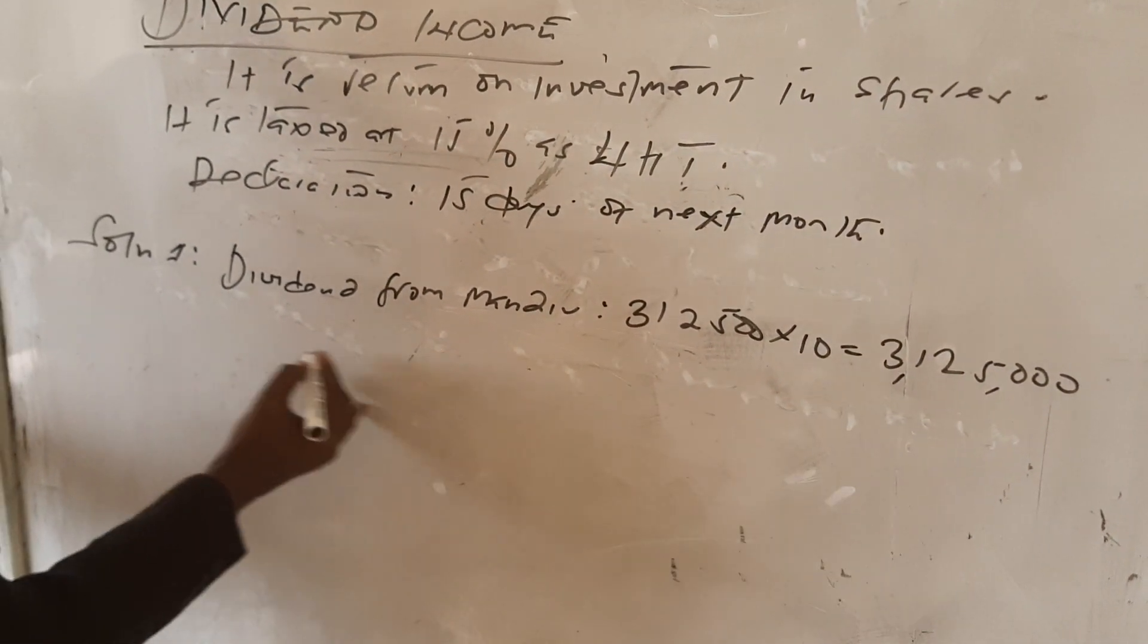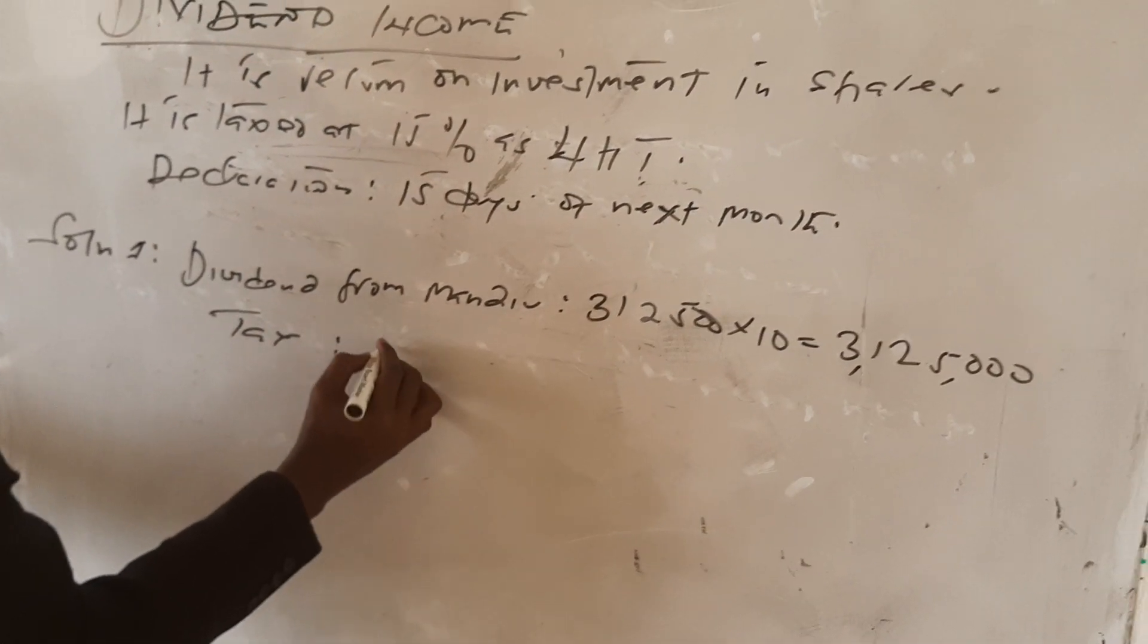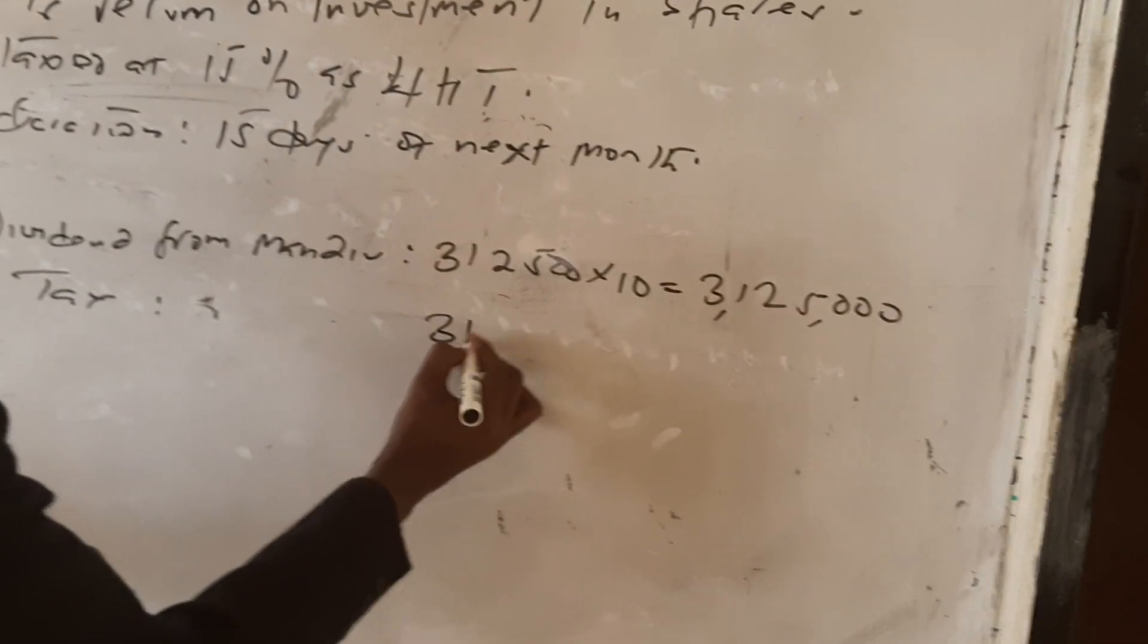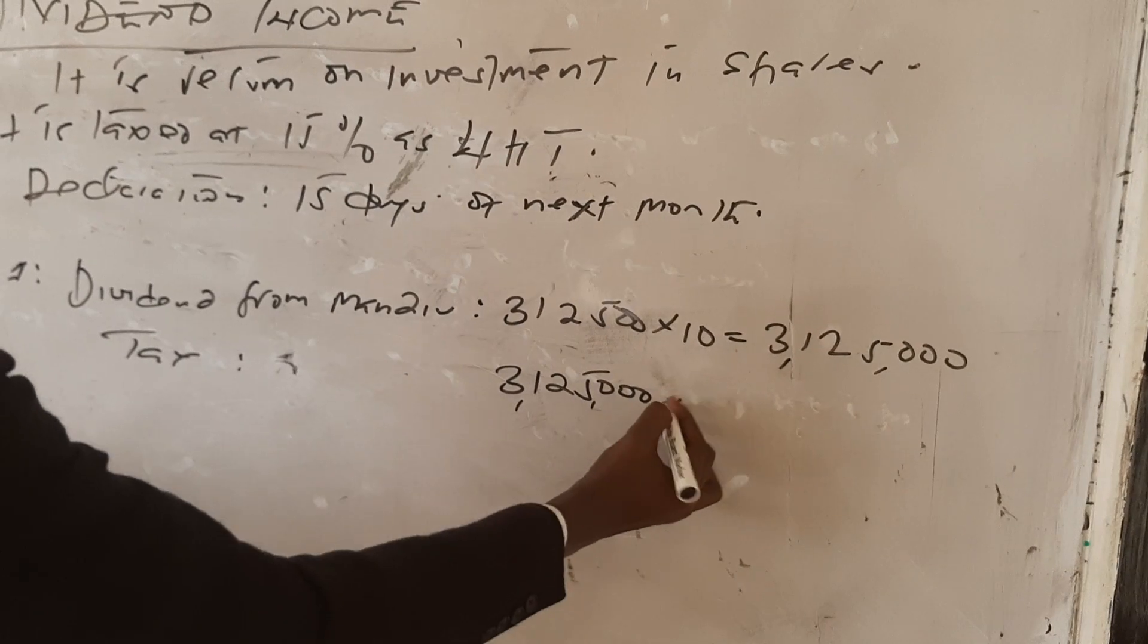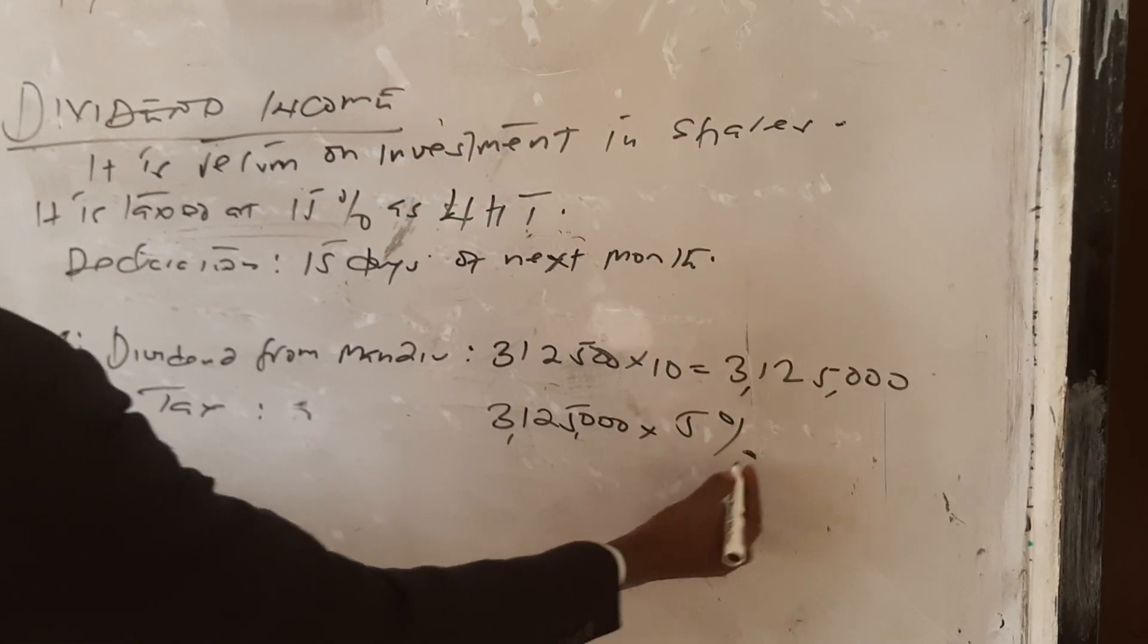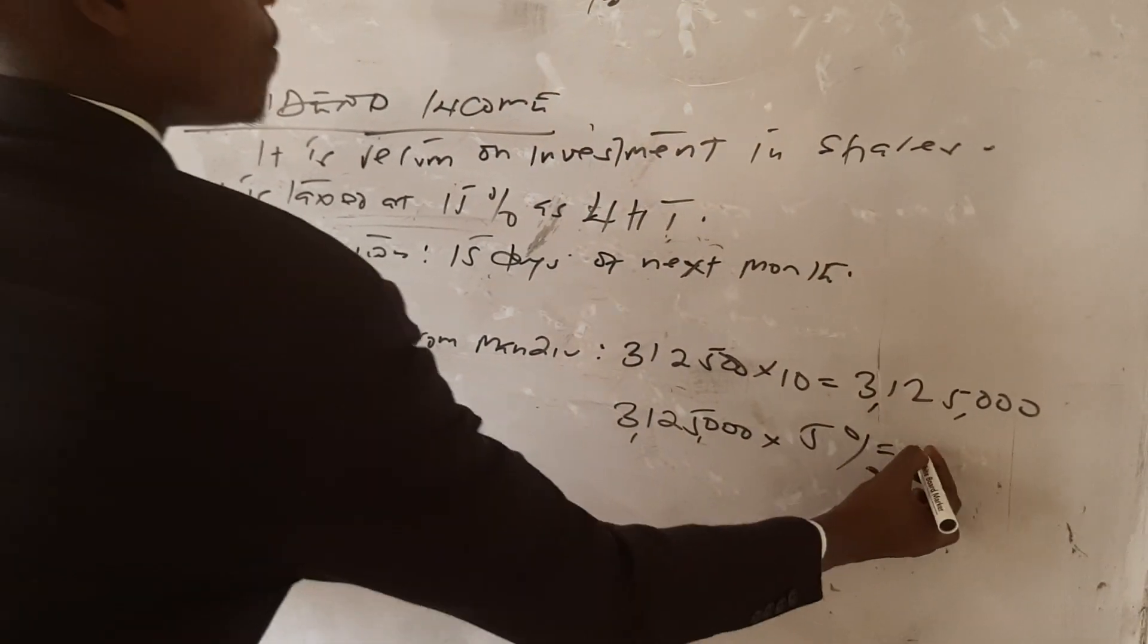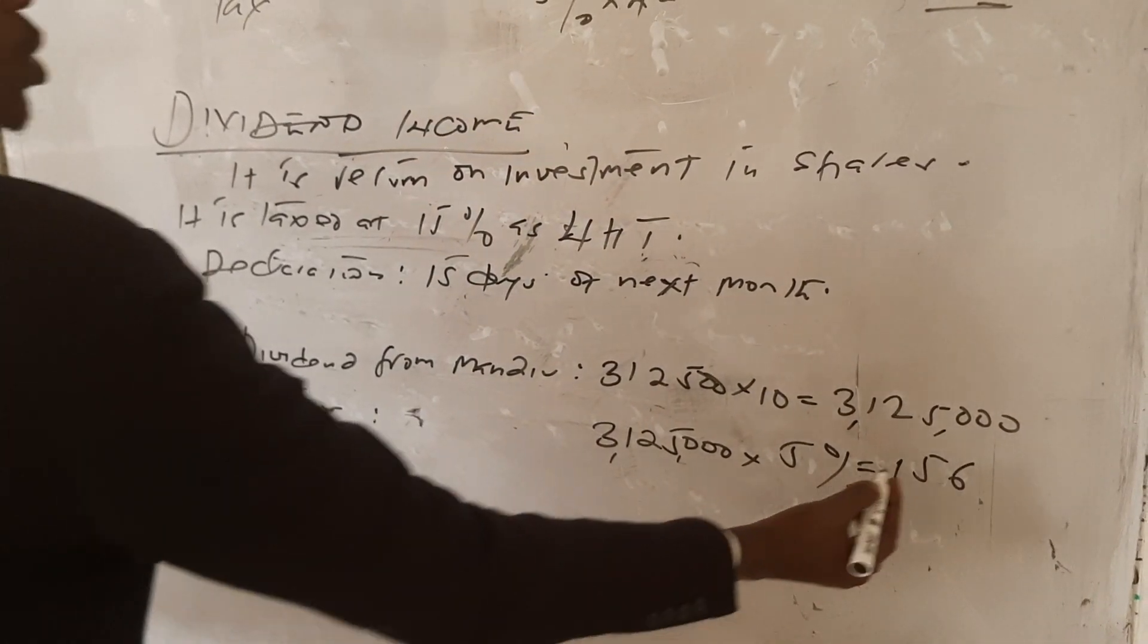Then I need to tax it. The tax here is 5%, which gives me 156,250.